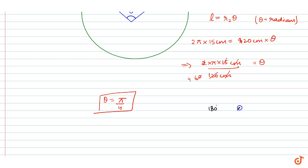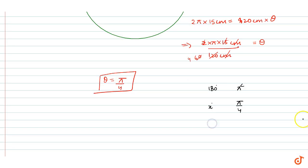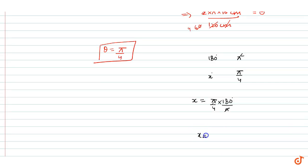We know that 180 degrees means π radians, so π/4 would be x degrees. Using cross multiplication, we get x equals π/4 times 180 degrees divided by π. Pi cancels out, and x comes out to be 45 degrees.